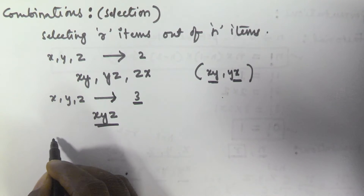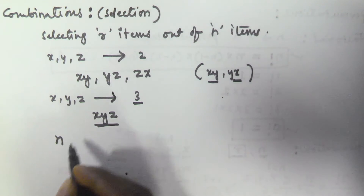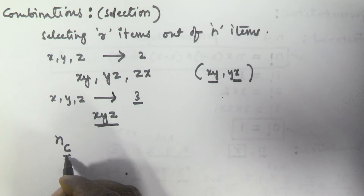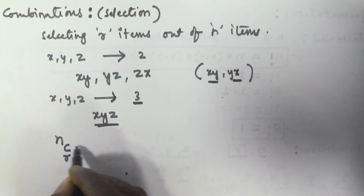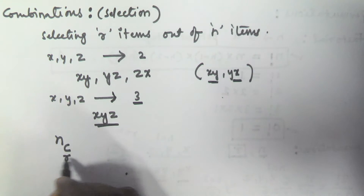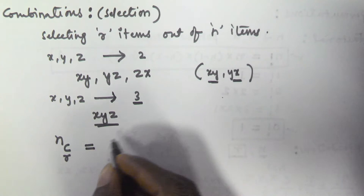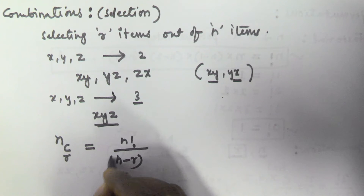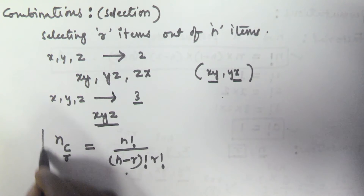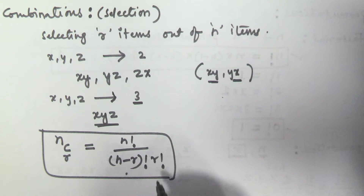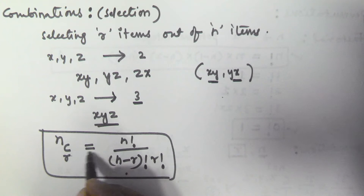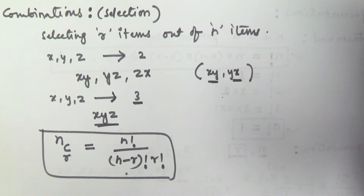Suppose out of n items we are selecting r items. The selection of r items out of n items is represented as nCr. The value of nCr is equal to n factorial divided by (n minus r) factorial into r factorial.